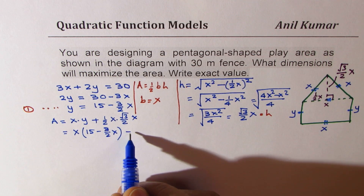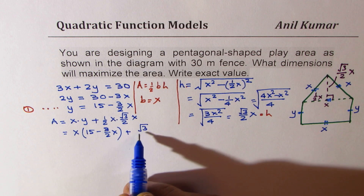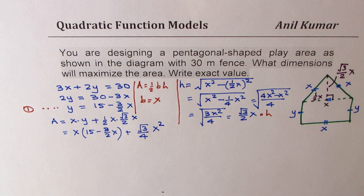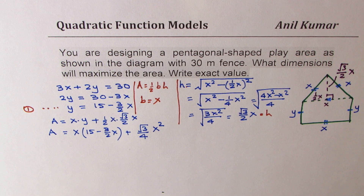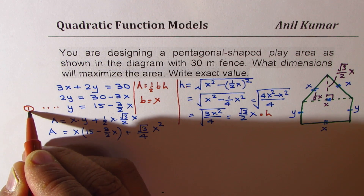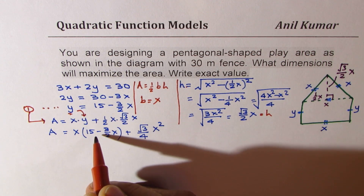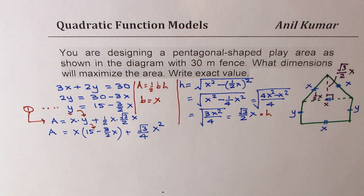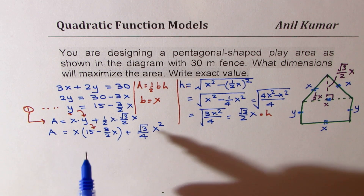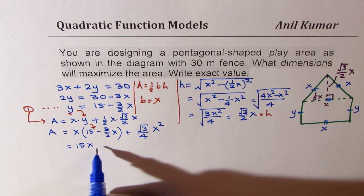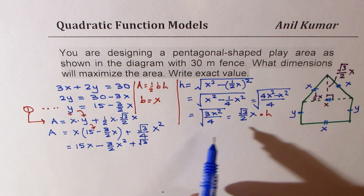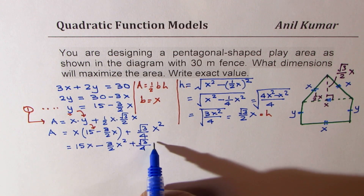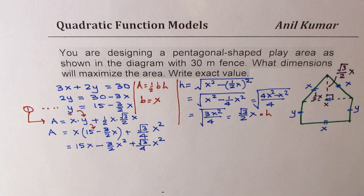Combining: (1/2)·(1/2) = 1/4, so we get (√3/4)·x². That becomes an expression for area in only one variable x, since we substituted y = 15 − (3/2)x. Opening the bracket: Area = 15x − (3/2)x² + (√3/4)x².